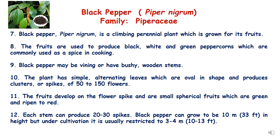Piper nigrum is a climbing perennial plant grown for its fruits. The fruits are used to produce black, white, and green peppercorns, commonly used as spice in cooking. The plant has simple alternating oval leaves and produces spikes of 50 to 150 flowers. The fruits developed on the flower spike are small and spherical — green when unripe and red when ripe. Each stem can produce 20 to 30 spikes, and though the plant can grow up to 10 meters, under cultivation it is usually restricted to three to four meters.